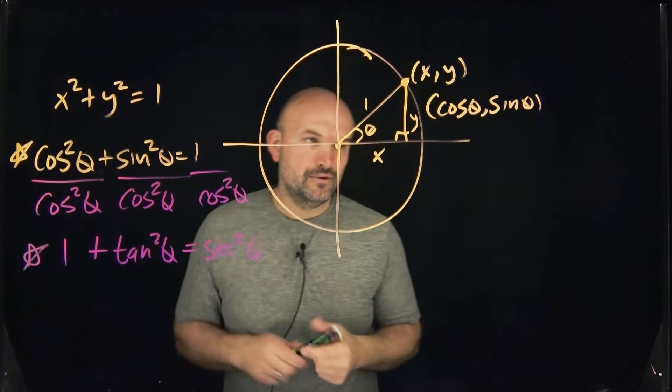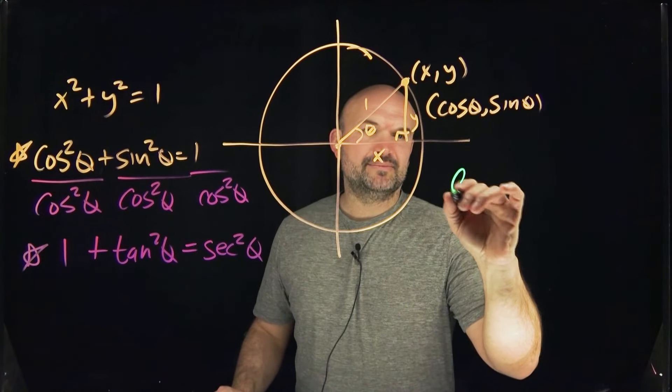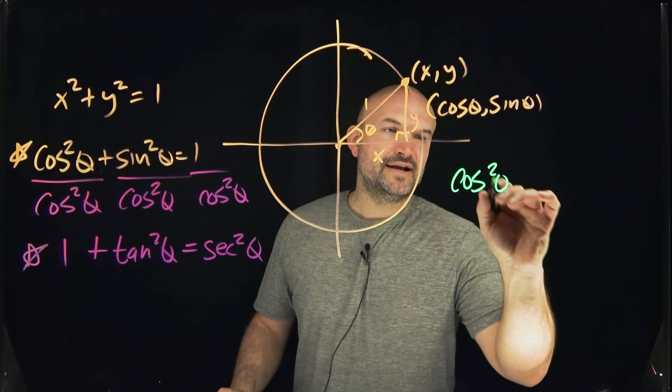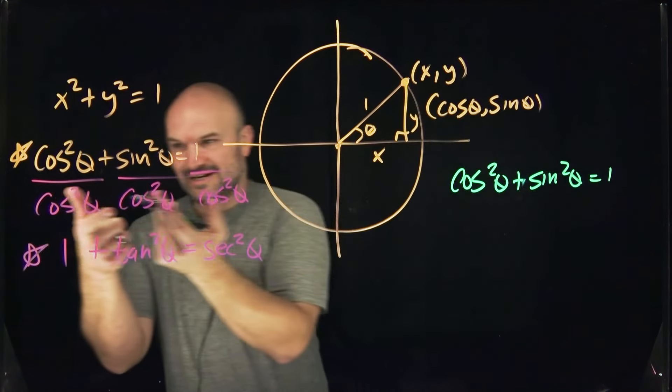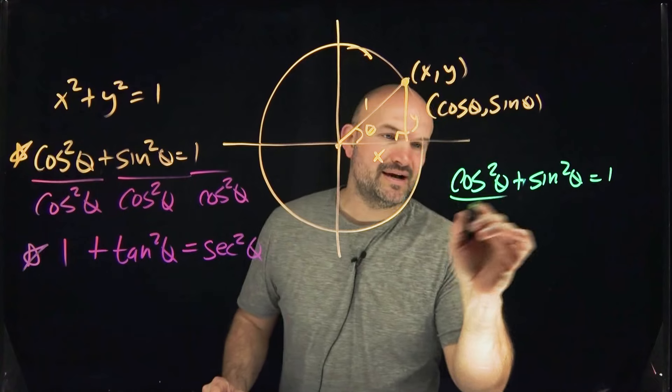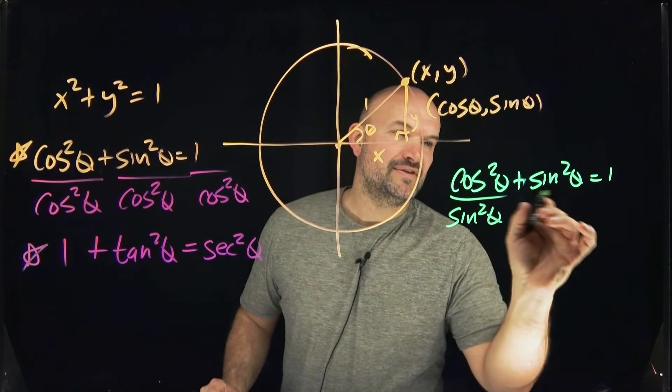Now let's go and look for one more. So let's go ahead and rewrite the Pythagorean identity again. Cosine squared of theta plus sine squared of theta is equal to one. Now, instead of dividing everything by cosine, let's go and divide everything by sine squared of theta.